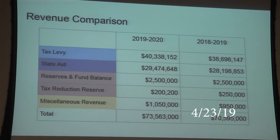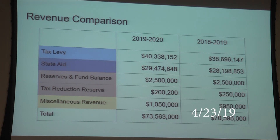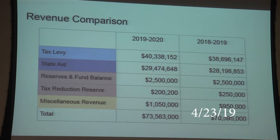PILOTs are in the miscellaneous revenue section. We currently have three PILOTs with the City of Beacon — apartment complexes where an agreement was made with the city but it has a school district tax component. The city collects it, a portion goes to the school district, and a portion goes to the library. They're not on the tax roll; they have a contract where they pay their portion of school taxes, but it doesn't go into the tax levy.